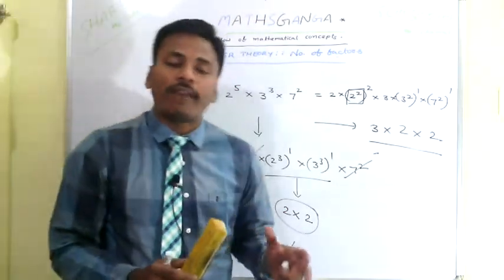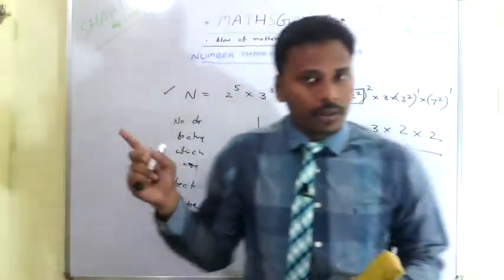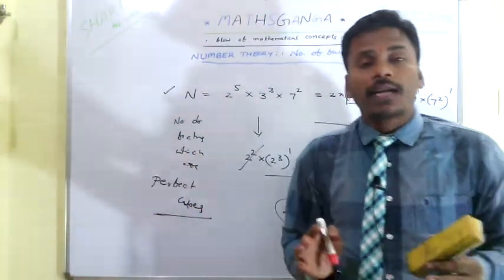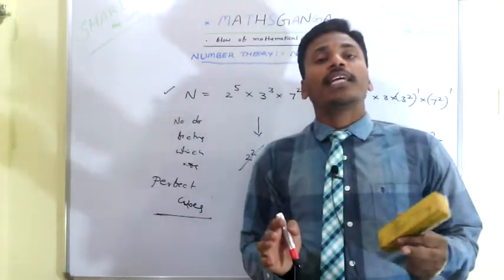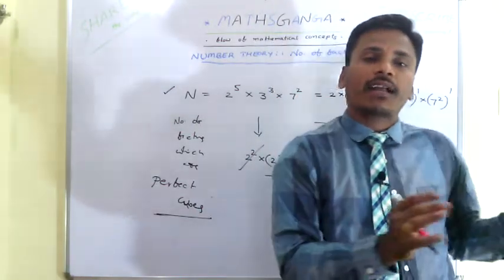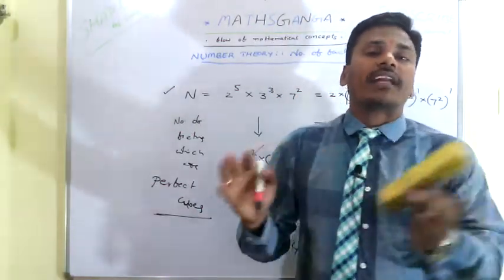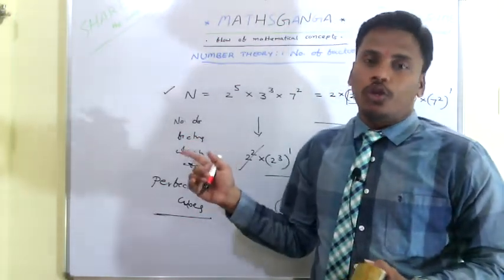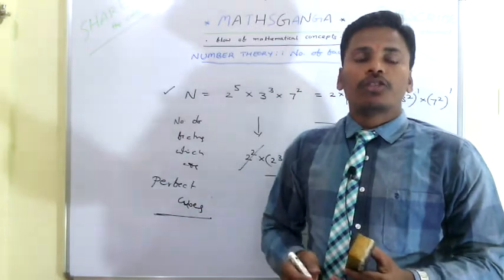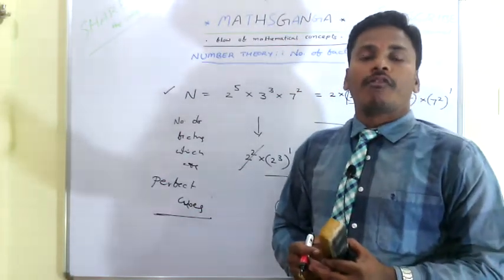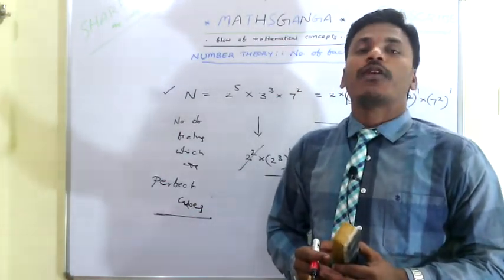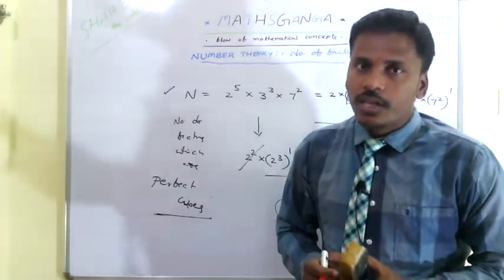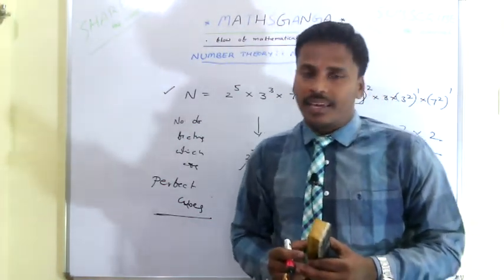This is the direct way of finding the number of factors for the given number. Finding the number of factors is a simple task, but if anybody asks you to find the even factors, odd factors, factors which are multiples of 3, or factors which are perfect squares, then this is the way of calculating those. Do subscribe to the channel, refer it to your friends, I hope this video is helpful for your preparation. If it is helpful, do like it and share it.